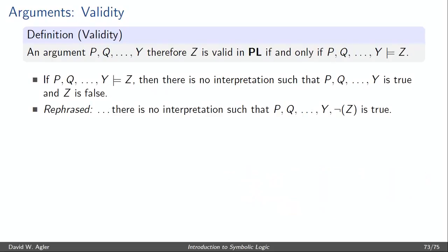In other words, there's no interpretation that would make P, Q, Y, and the negation of Z all true at the same time.